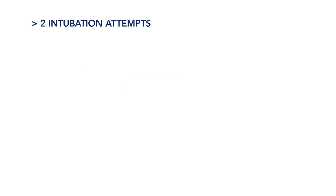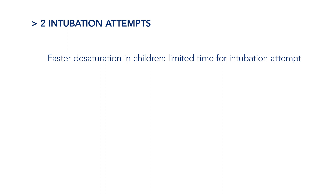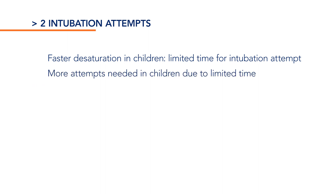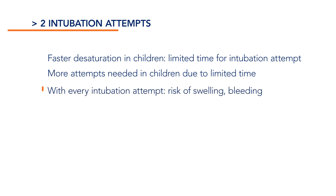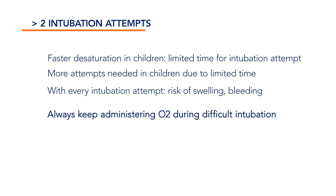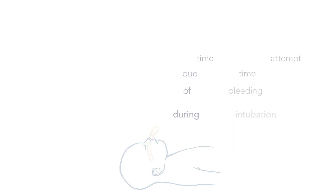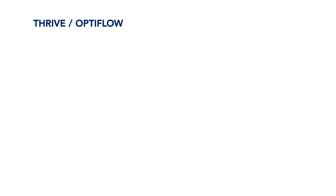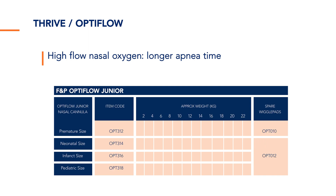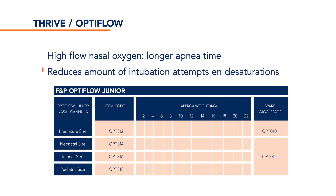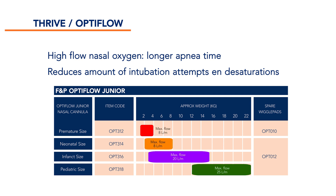Because desaturation in small children is so much faster, there is limited time for one intubation attempt. Therefore, more intubation attempts may be needed. Subsequently, every intubation attempt potentially induces swelling or bleeding, further compromising the difficult airway. It is therefore of vital importance to always keep administering oxygen during difficult intubation, for example using a nasopharyngeal airway. Another way to ensure continuous administration of oxygen is by using OptiFlow or Thrive. The continuous flow of oxygen enables longer apnea time and reduces the amount of intubation attempts and desaturations. The maximum flow administered should be adapted to the age and weight of the child.